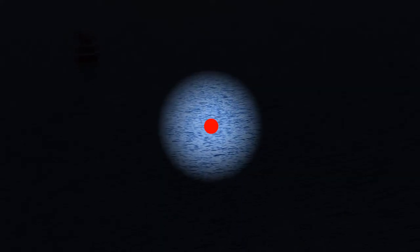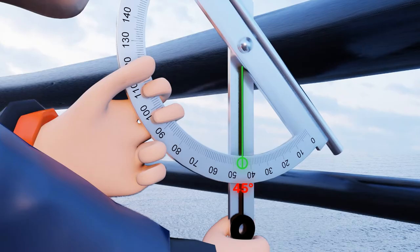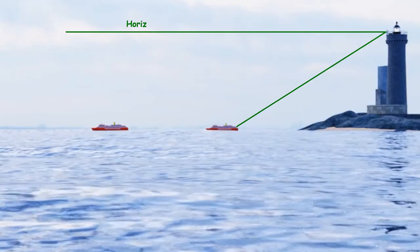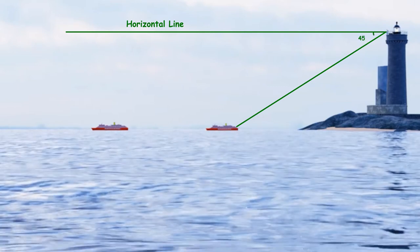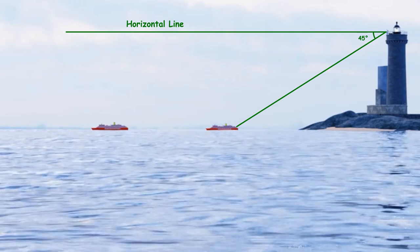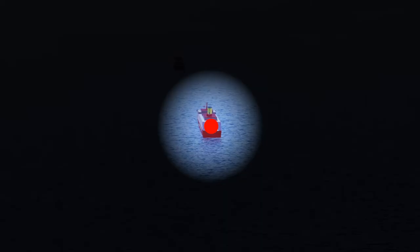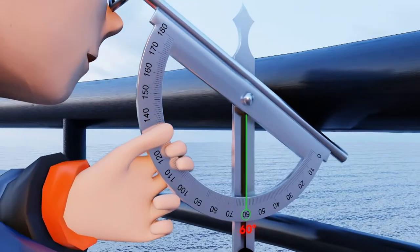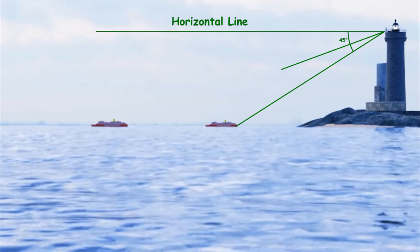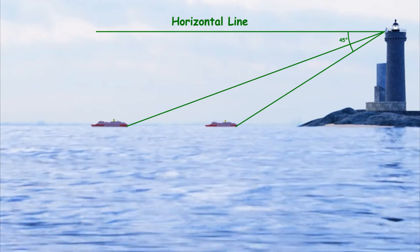As we observed the first ship through the straw on the clinometer, we see that the thread is pointing towards 45 degrees. Thus, the angle of depression of the first ship will be 90 minus 45 degrees, that is 45 degrees. Now, we shall observe the second ship in the similar way. We see that the thread is pointing towards 60 degrees. Thus, the angle of depression of the second ship will be 90 minus 60 degrees, that is 30 degrees.